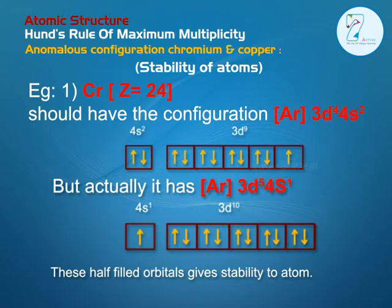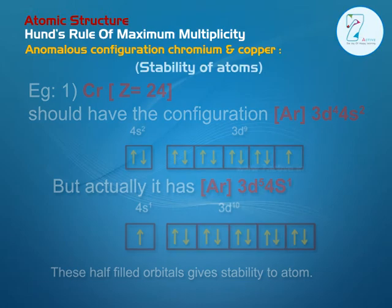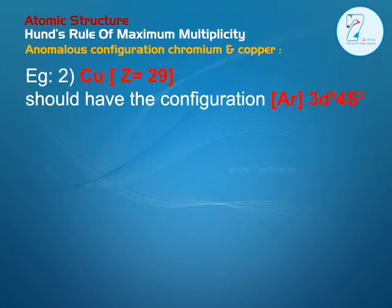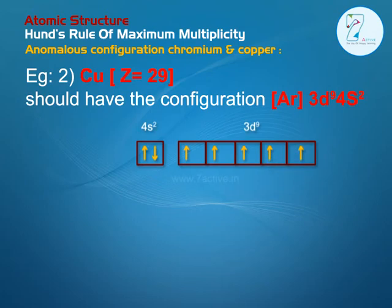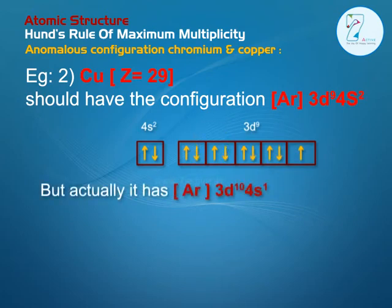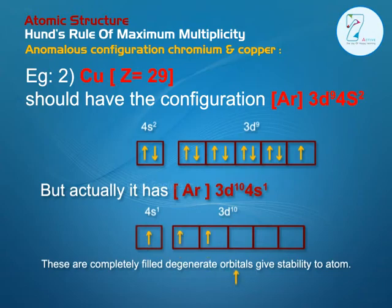Copper, atomic number Z equals 29, should have the configuration Argon 3d9 4s2, but actually it has Argon 3d10 4s1. This configuration gives completely filled d orbitals and a half-filled s orbital.